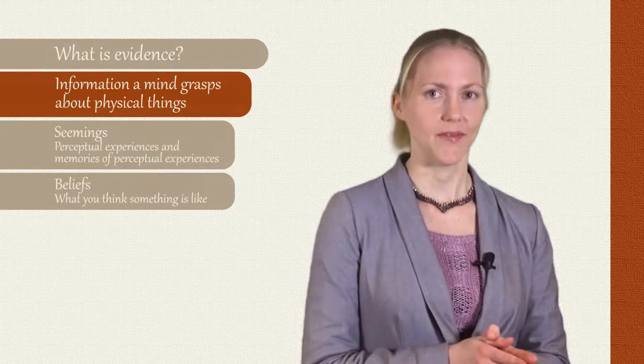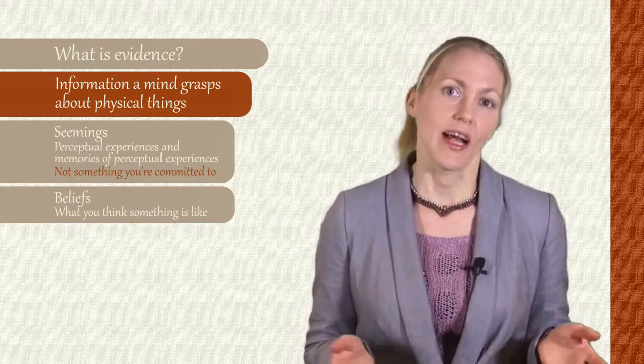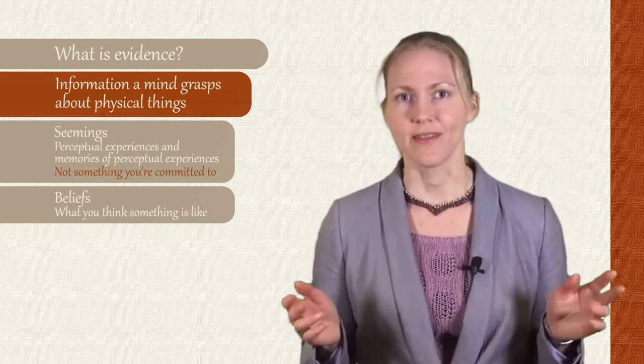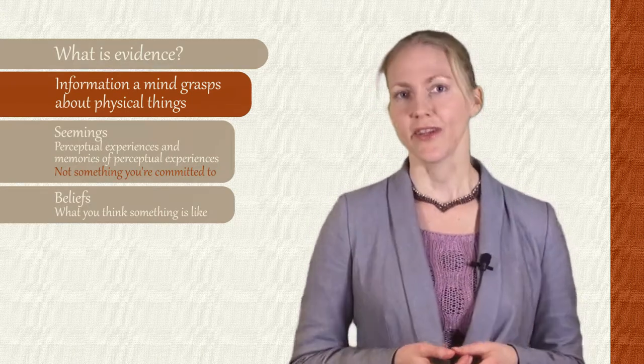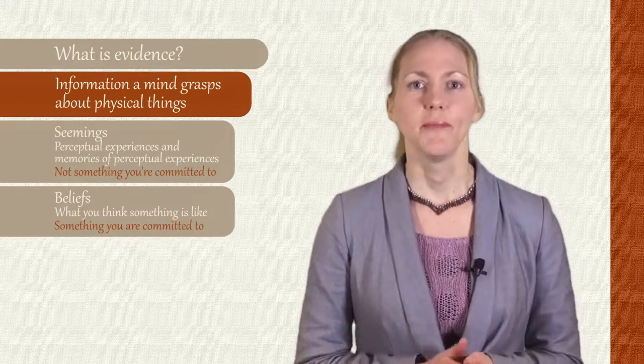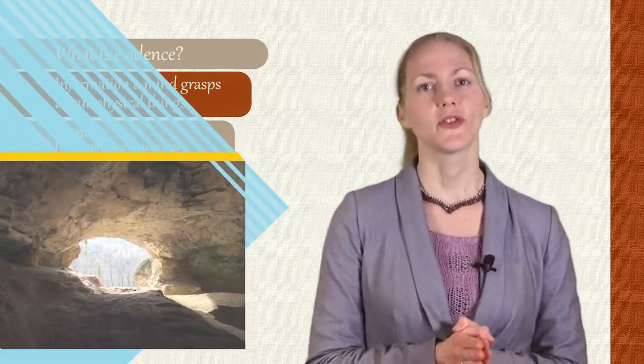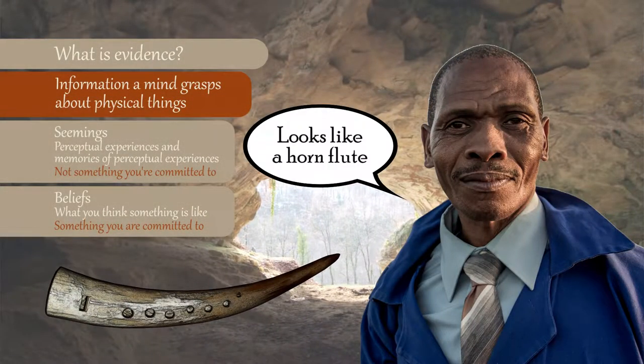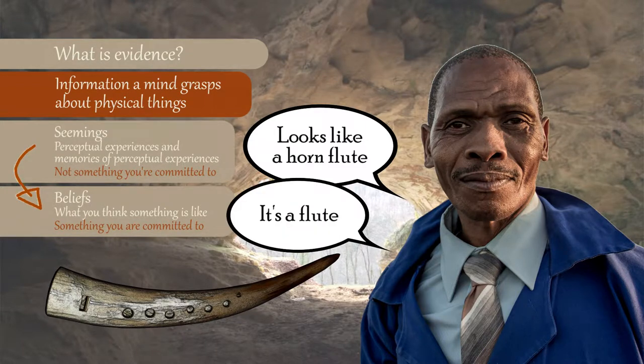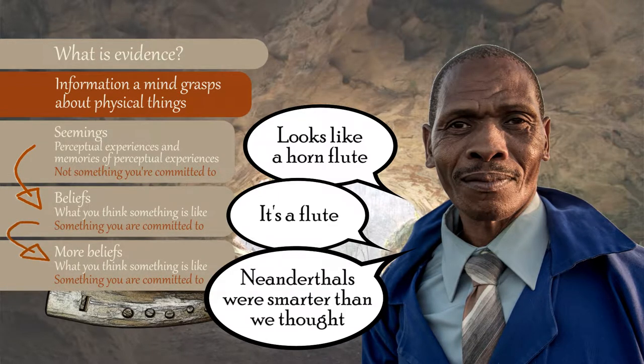The difference between seemings and beliefs is this: A seeming is just an appearance which you may or may not think is accurate. So a mirage is an example of a seeming which you don't think is accurate most of the time. A belief, on the other hand, is something you are committed to. You think it describes the world the way it is. And this gives a certain hierarchy to our evidence. Seemings tend to come first, and when we form judgments about them, about whether they're veridical, we get further beliefs. And these further beliefs can be themselves the basis for yet more beliefs.